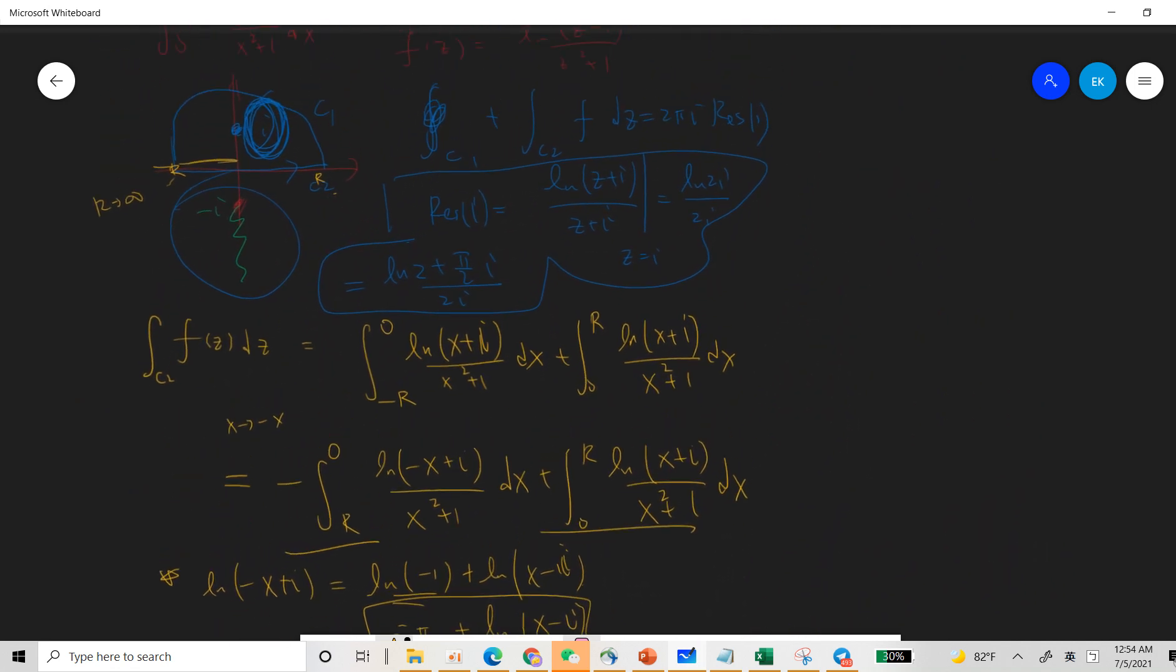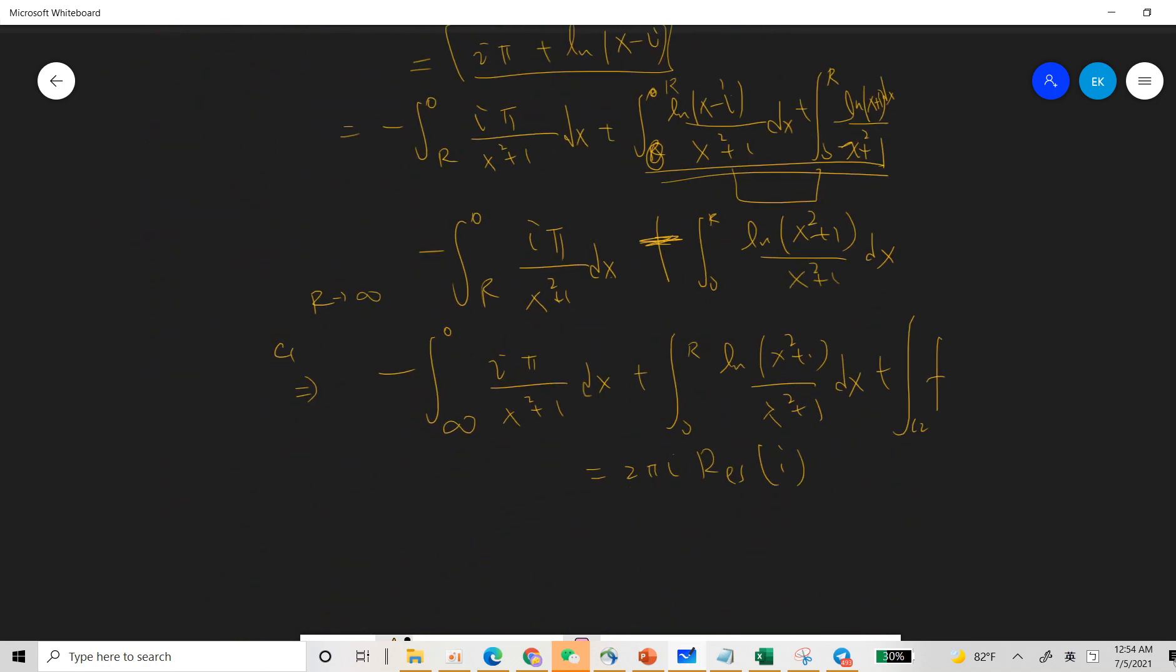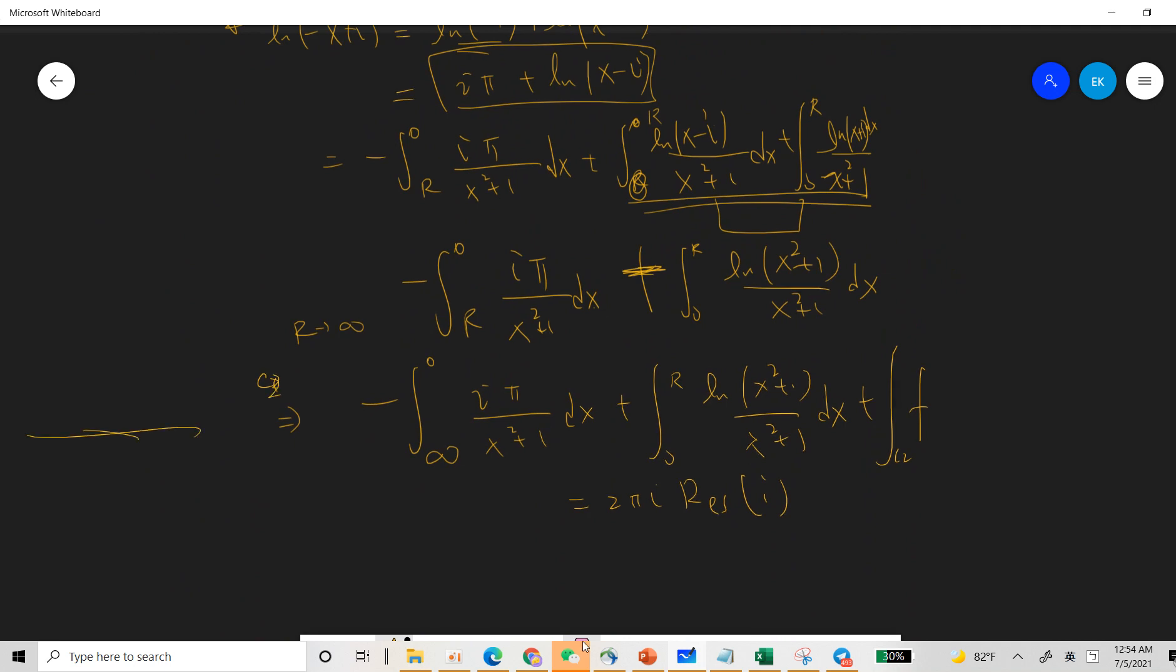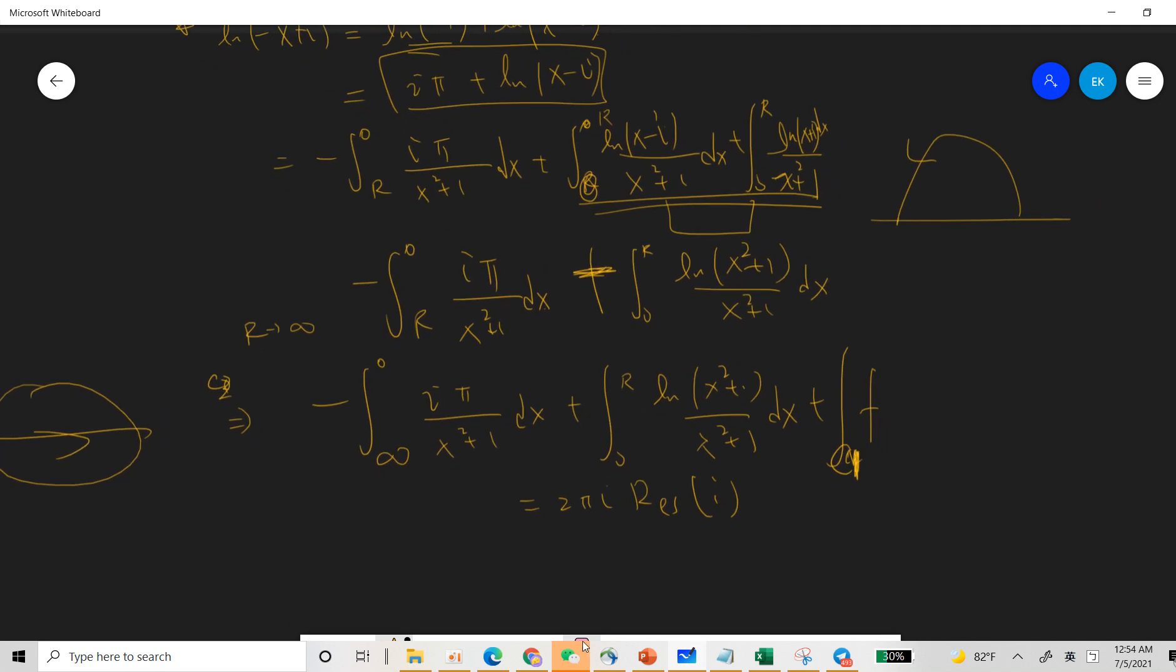But notice that this should be c2. Because I define c2 to be a straight line and the c1 should be arc. So now let's estimate. So c1, z is r times e to the minus i theta. So our original f of z is defined to be log z plus i over z squared plus 1. So when z goes to infinity, the denominator term is r squared term, and the numerator term is log r term, and there is a dz, so r. So it's easy to see that when r goes to infinity, this term is log r divided by r, which goes to 0. So the arc term do not have any contribution, so we don't care this.